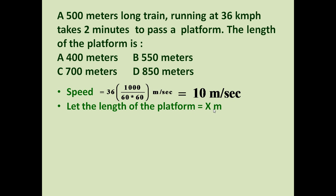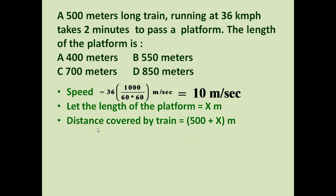Speed is equal to 10 meters per second. Now let us assume the length of the platform is equal to x meters — this is the value we have to determine. The total distance to be covered by the train is 500 meters (length of train) plus x (length of platform). The train must cover this total distance to completely cross the platform.